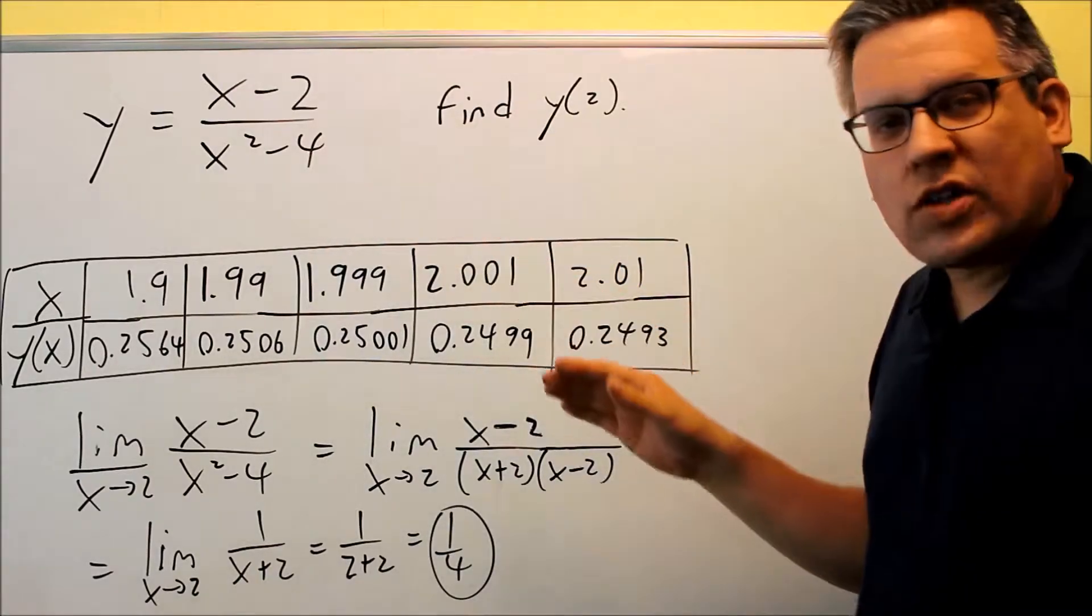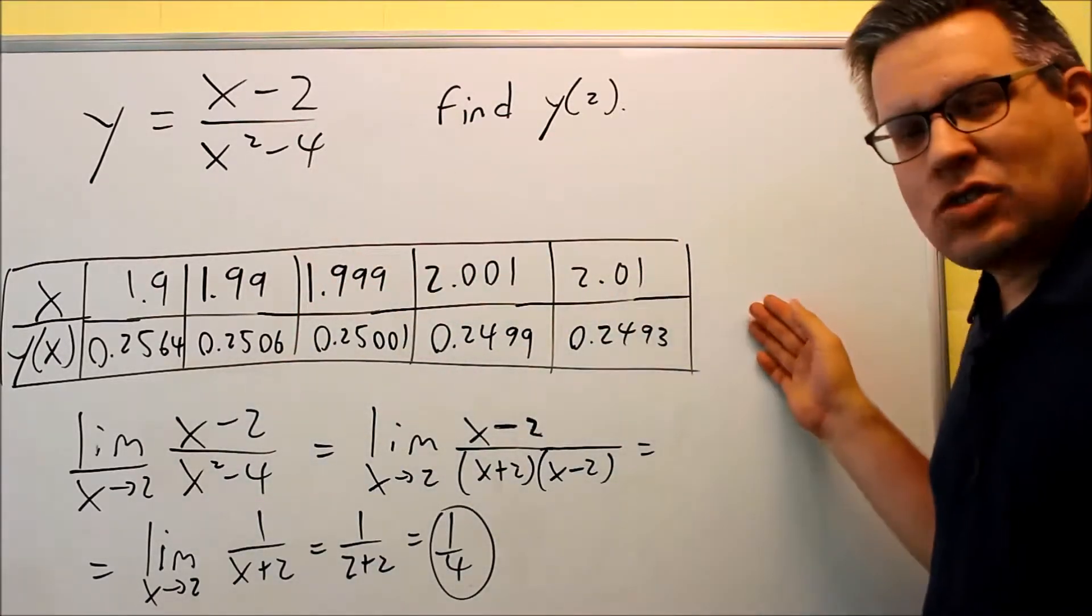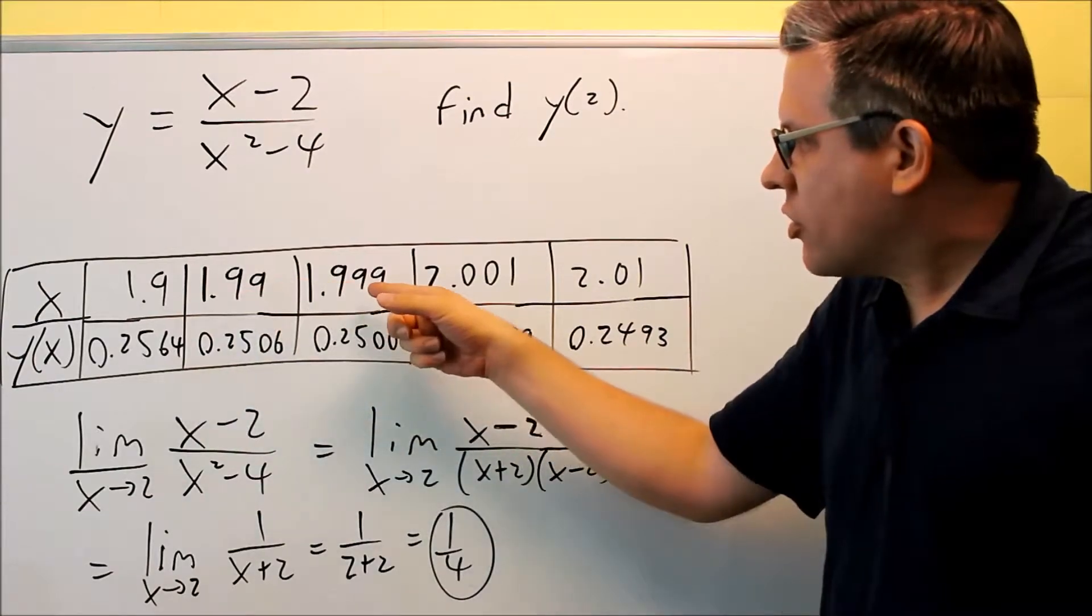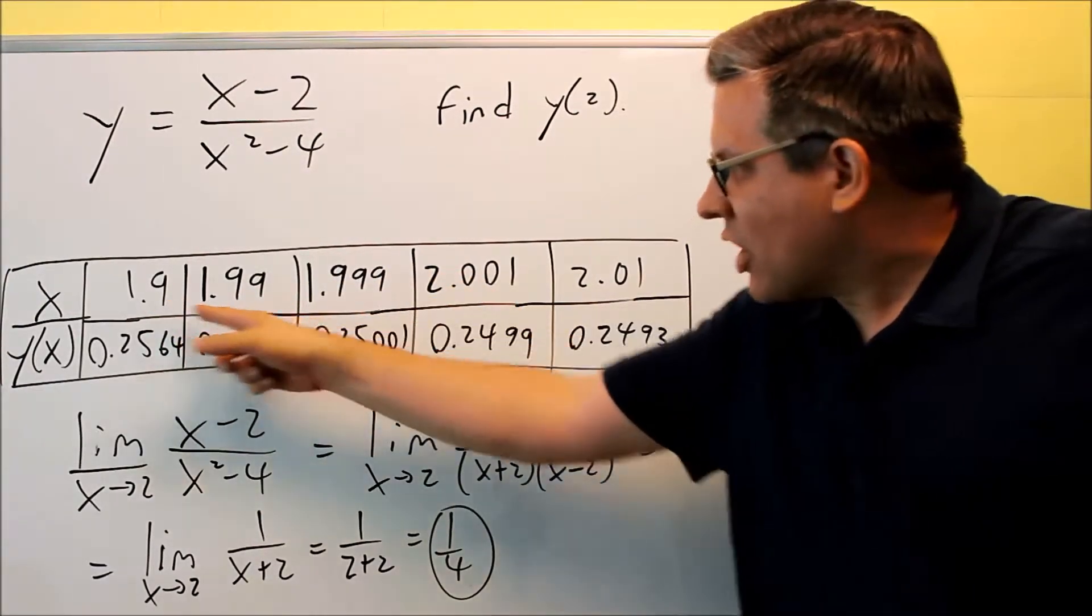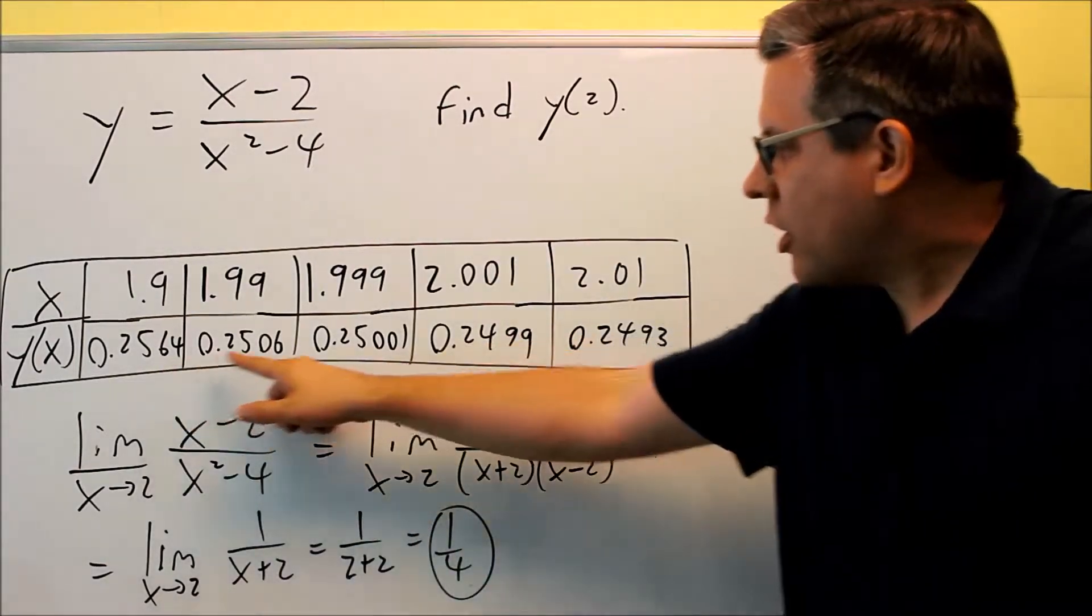what if we want to see what's happening when we get very close to this value of 2? This is what this table here is showing us. Notice that I'm getting progressively closer to 2 from each direction. So this is slightly less than 2, this is slightly more than 2, and here's the corresponding y values.